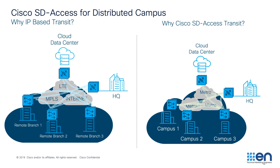IP transit is for customers whose remote branches are connected via traditional WAN or MPLS, where direct internet access, site-to-site encryption, traffic engineering, and policy-based routing are required. Here, consistent policy and end-to-end segmentation is achieved by some manual configuration. SD Access transit is required for customers who have multiple sites connected via dark fiber or DWDM links, or sites in the same metropolitan area, where consistent policy and end-to-end segmentation is achieved by just a few clicks.